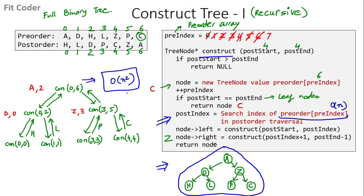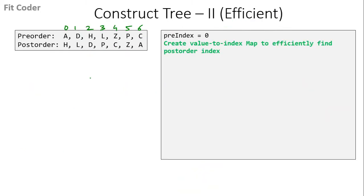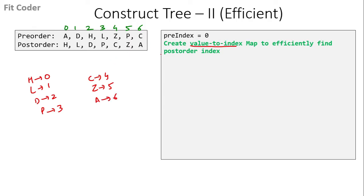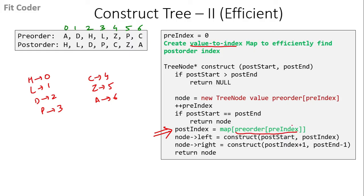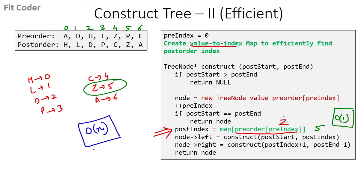We can optimize this to reduce the time complexity. To optimize, we create a value-to-index map to efficiently find the post-order index. We store the post-order values in a map: H→0, L→1, D→2, P→3, C→4, Z→5, A→6. Now when we need to search for a value in post-order, we simply refer to this map and get the index in O(1) time. By doing this optimization, the entire algorithm time is reduced from O(n²) to O(n).